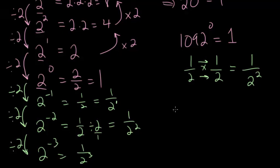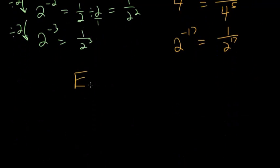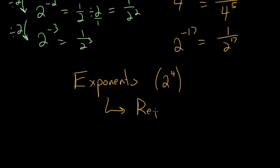So let's say we have 4 to the minus 5 power. This would just be 1 over 4 to the positive 5 power. Or if we have something like 2 to the minus 17 power, this would just be 1 over 2 to the 17 power. And one further way you can think about this is that for normal exponents, so something like 2 to the fourth power, you can think about this as repeated multiplication.